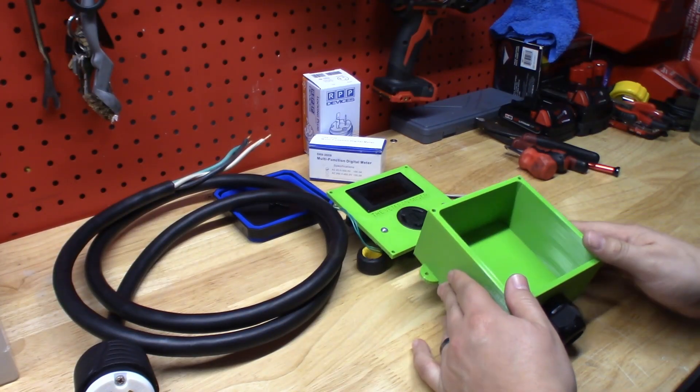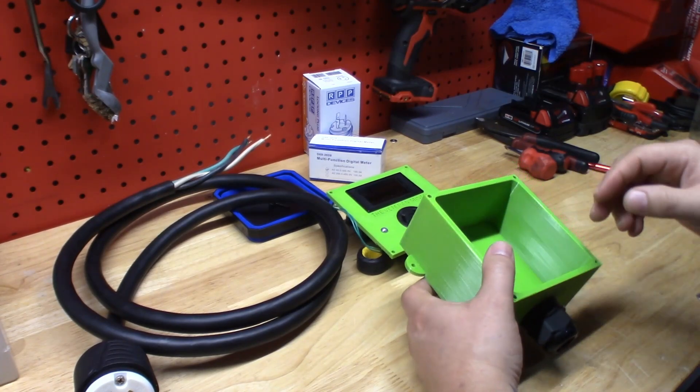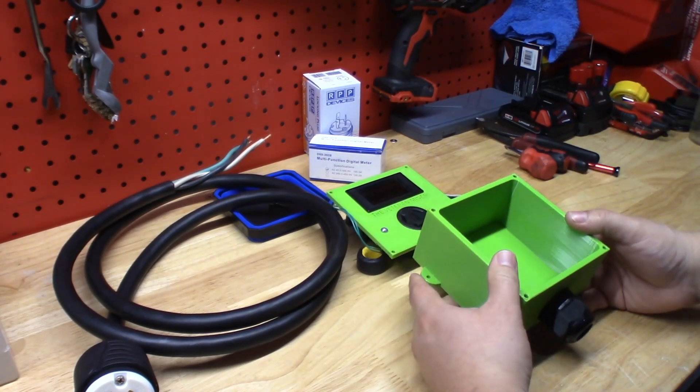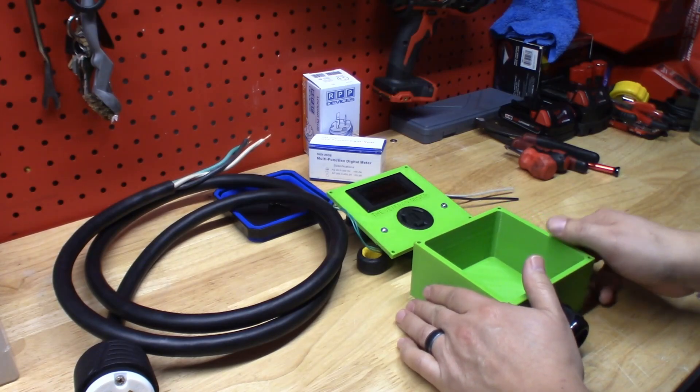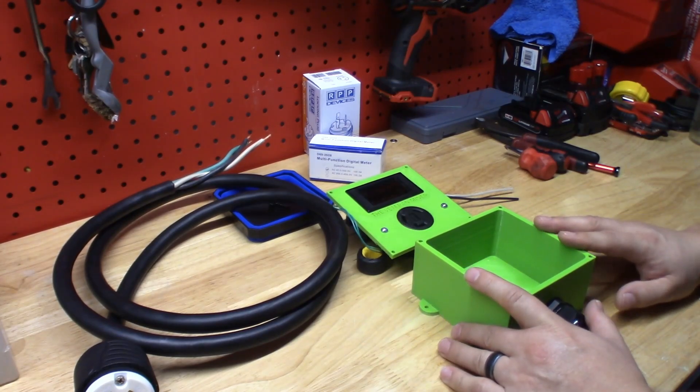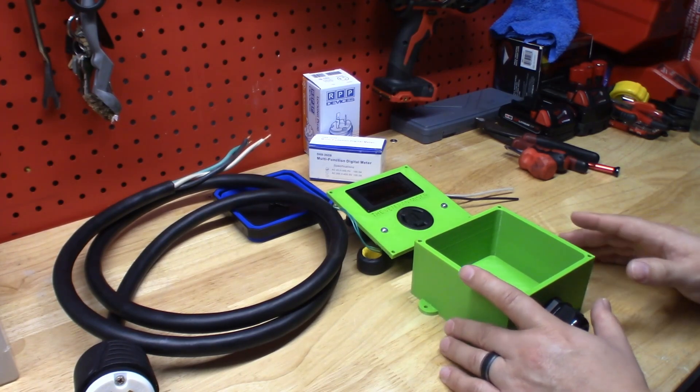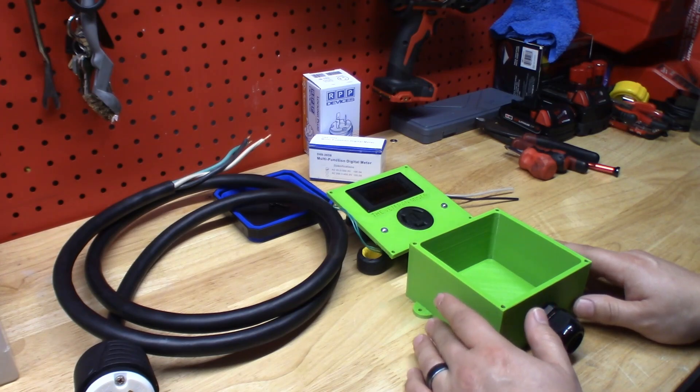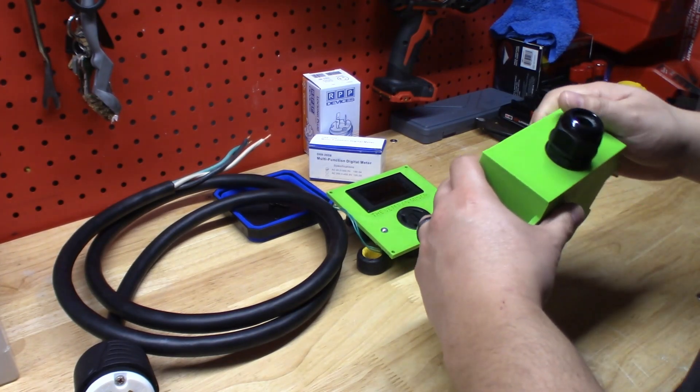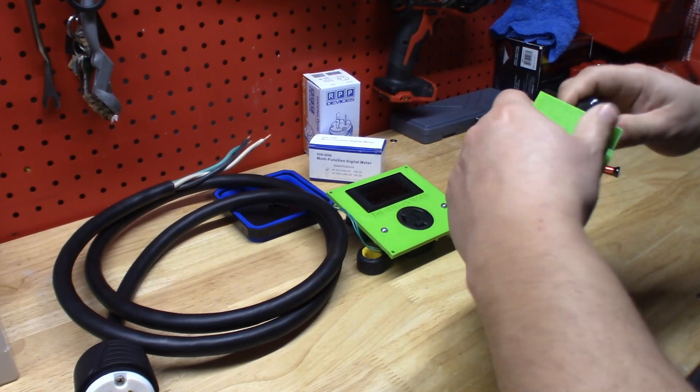What's going on miners, this is the Veteran Miner here. I want to show you how to put this meter box together. This meter box was made by a company called Grand J Tech. You can actually use the code Veteran Miner to get 10% off if you're interested in getting one of these boxes. Pretty nice box.